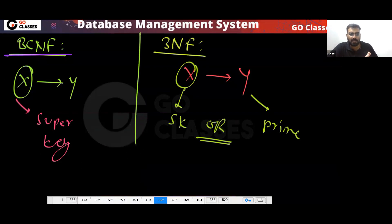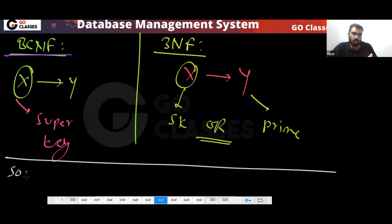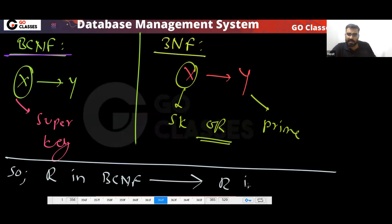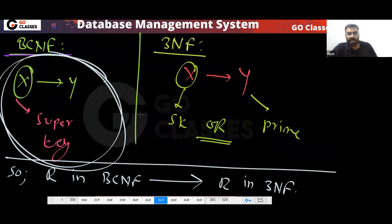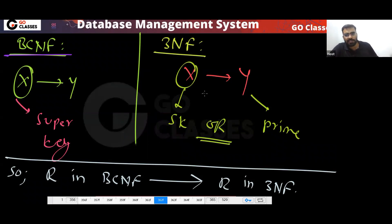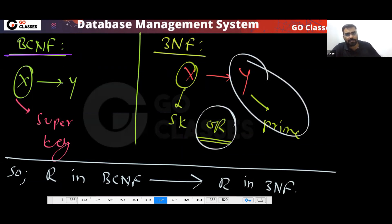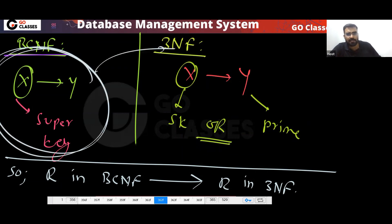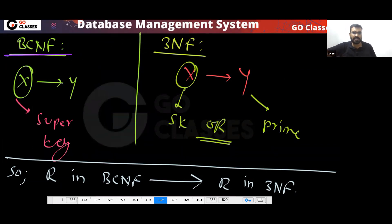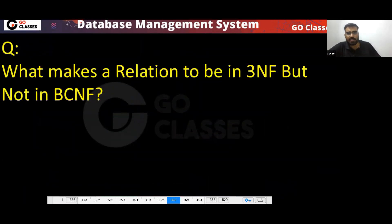Can I say every BCNF relation is also in 3NF? Yes. If your relation is in BCNF, automatically it is in 3NF. Because 3NF says either the LHS should be a super key or the RHS should be prime — so if BCNF holds (LHS is super key), then 3NF is satisfied automatically.